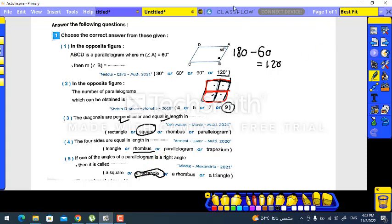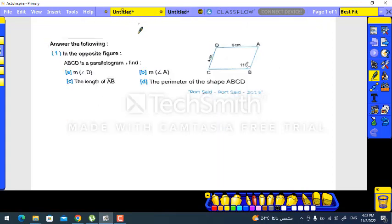Let's move to the next. ABCD is a parallelogram. Find measure D. Yes, measure D here is opposite to B, so D will be the same, 110 degrees. Measure A is adjacent to B, so I can get it by subtracting from 180, so it will be 70 degrees.